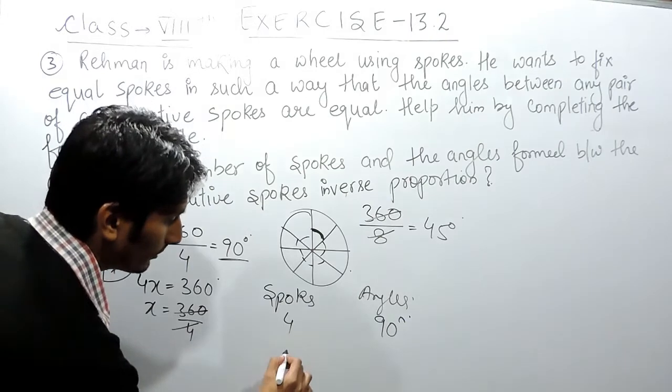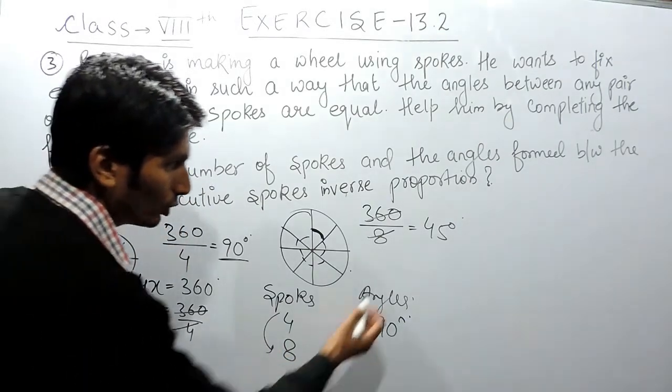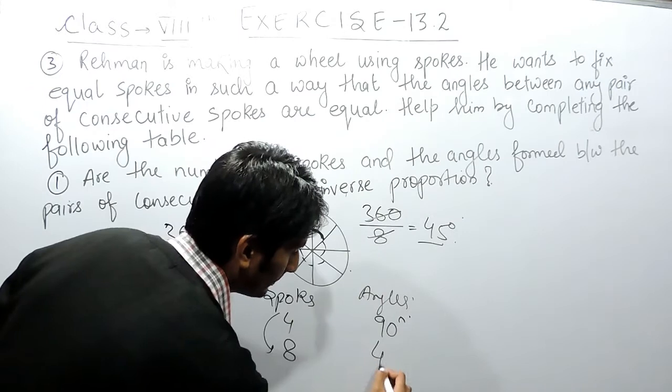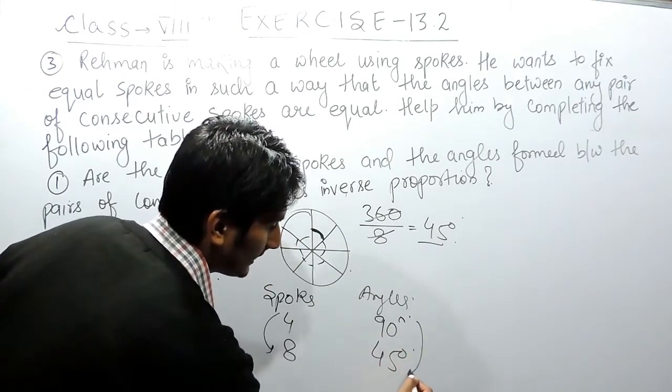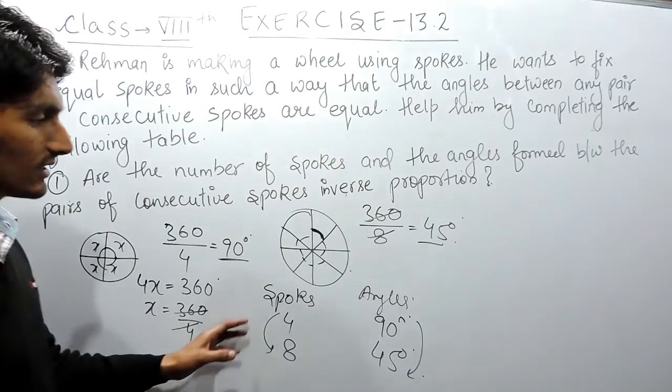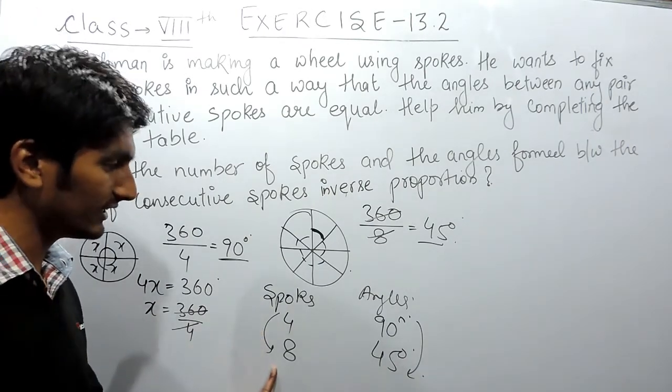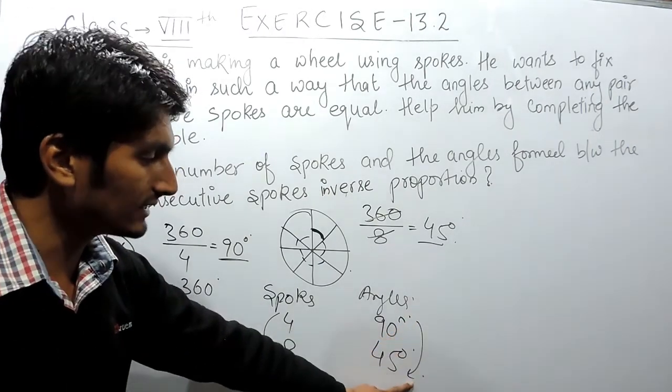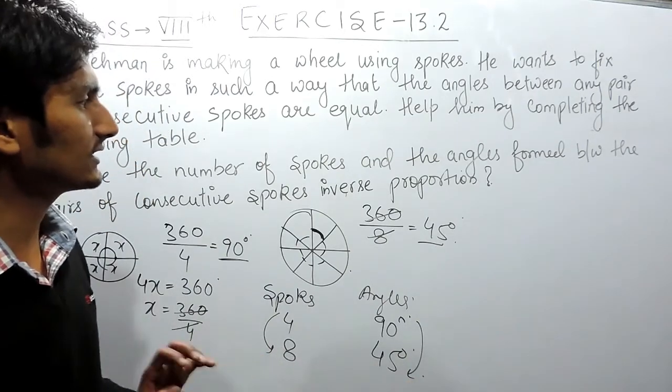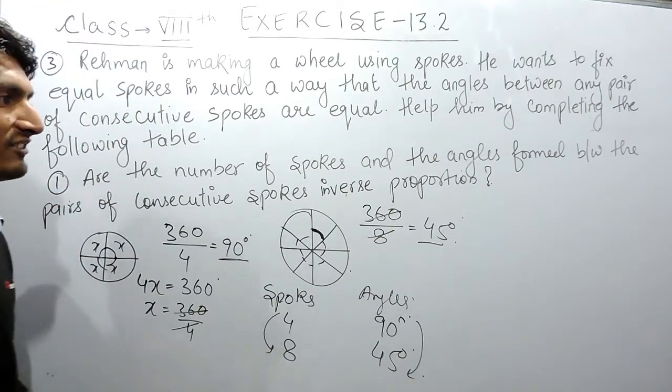Now the number of spokes are 8, these are increased. So the angle between them is decreased. Clearly this is inverse proportion because when the number of spokes increase, the angle between them gets decreased. So this is an example of inverse proportion.